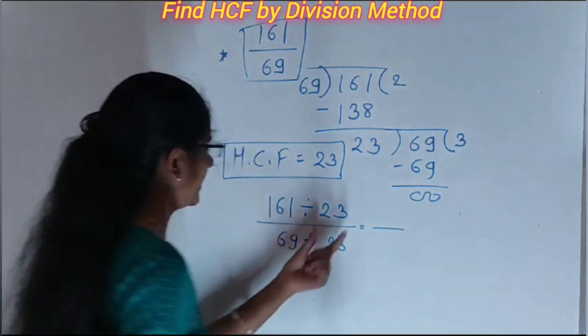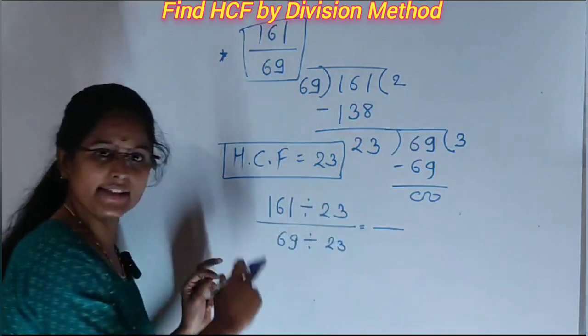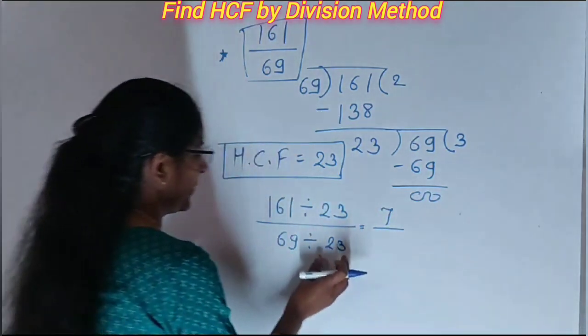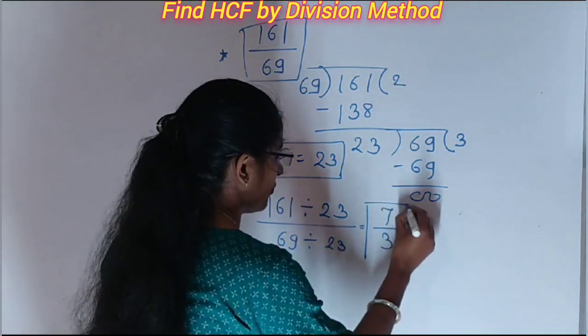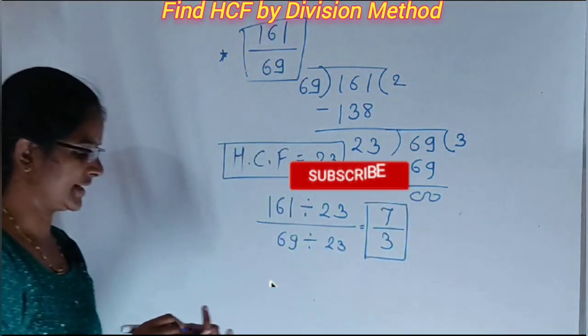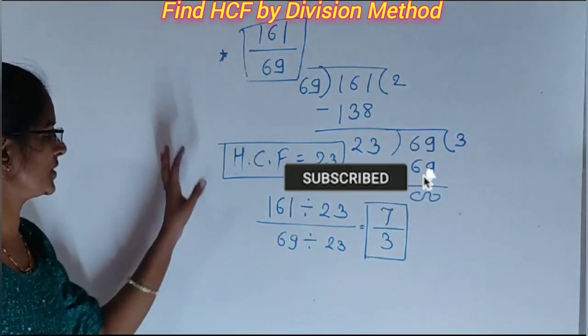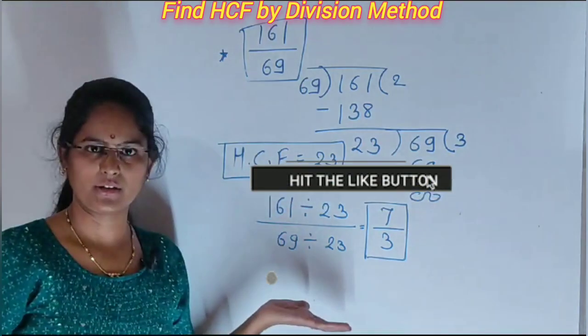When we use the table of 23, 23 sevens are 161, and 23 threes are 69. This is the simplest form of this question or this number. By using the division method, we find the HCF in this way.